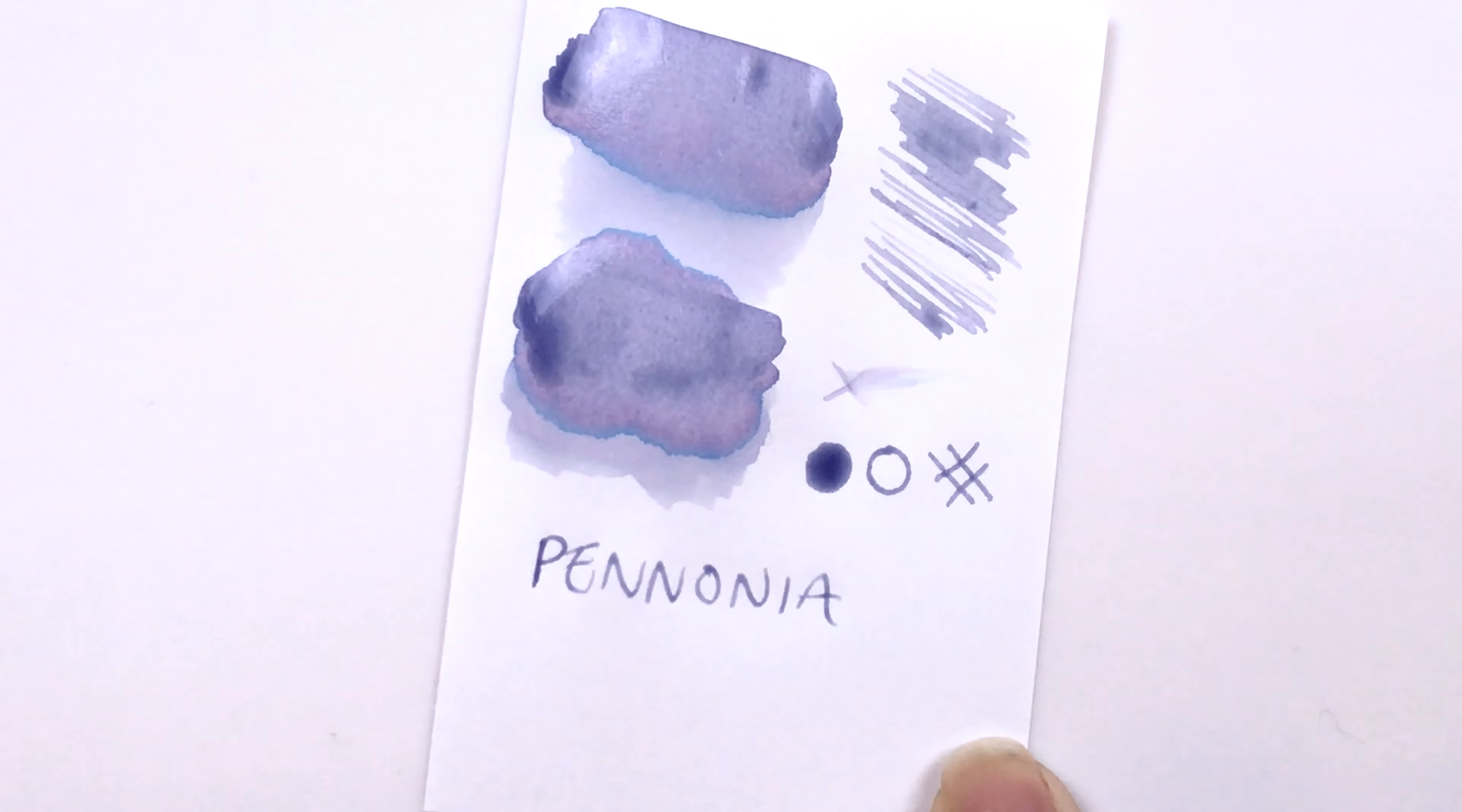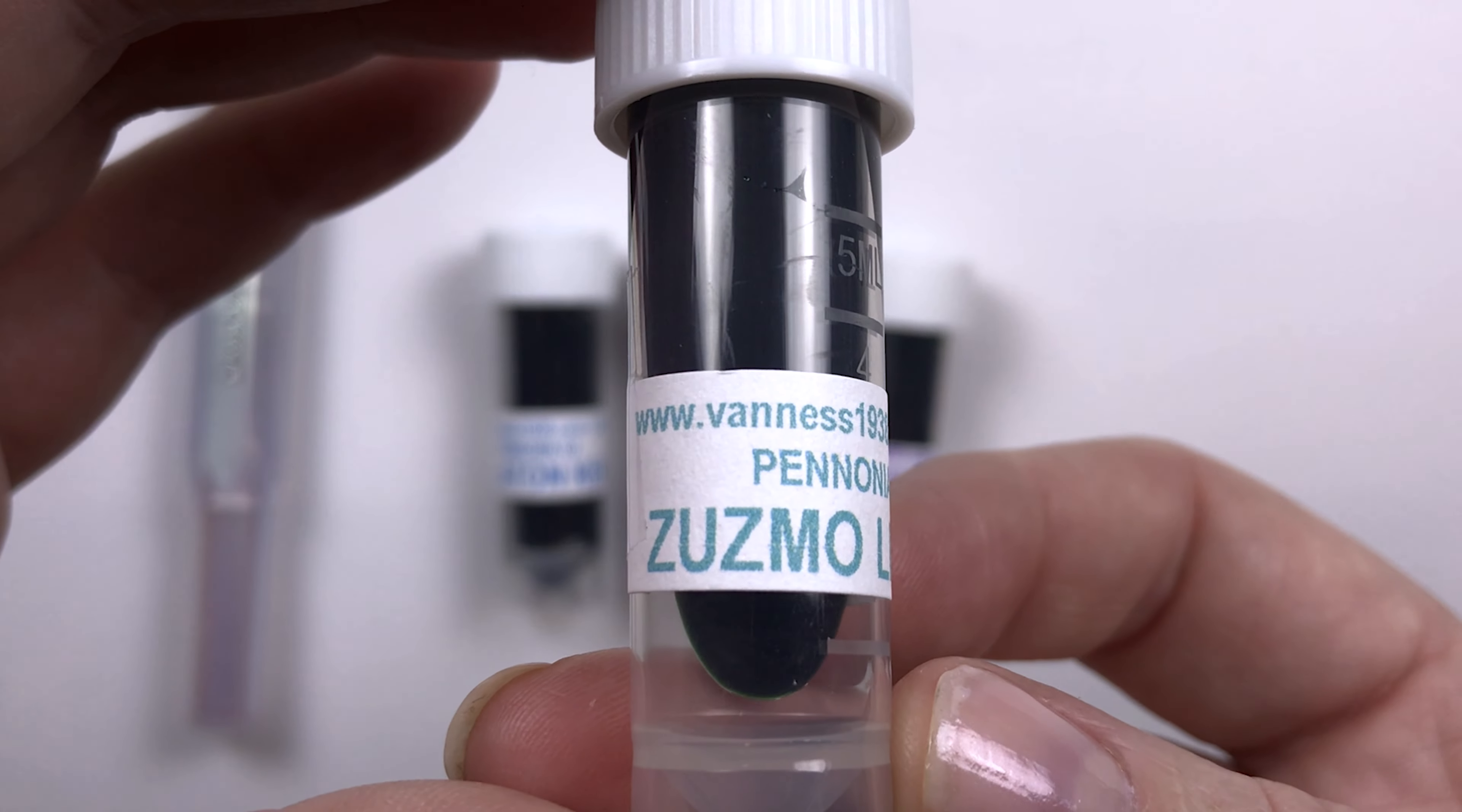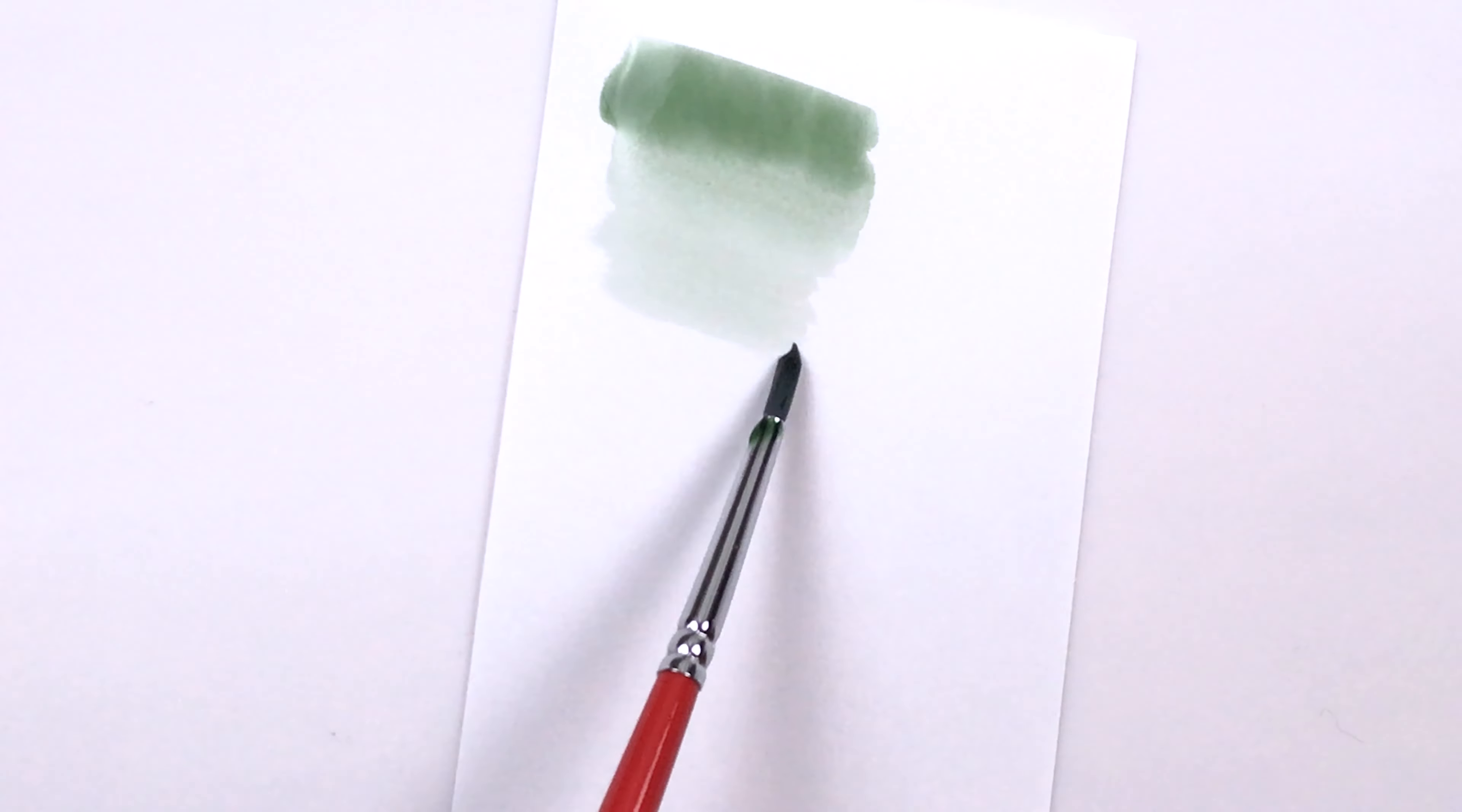So I thought one of these chromo shading inks from Pennonia would be a great choice for this pen because the iridescent pen is always morphing from one color to another or you have several colors at once. It just seemed like a cool choice to ink it up for the first time with one of these.